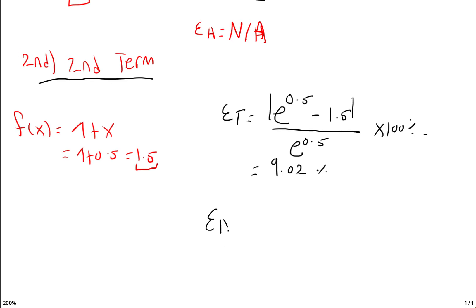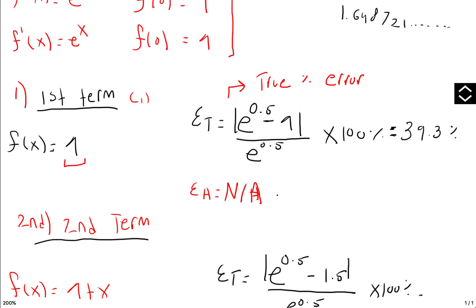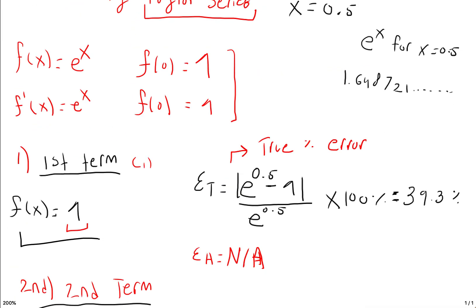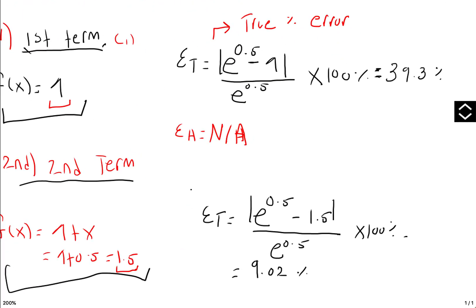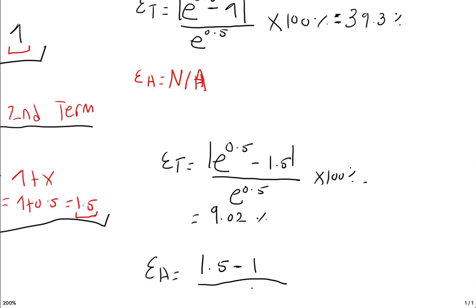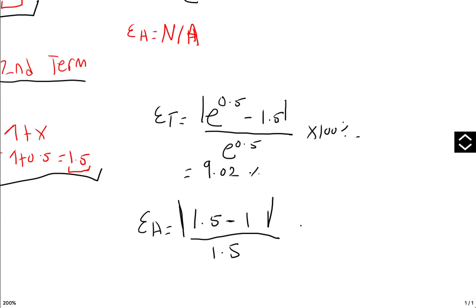For the relative error, we use the approximation just calculated with the Maclaurin series — which is 1.5 — and subtract by the previous term, which was 1. So it's the absolute value of (1.5 minus 1) divided by 1.5, multiplied by 100%. Plugging this in gives a relative percent error of 33.3%.